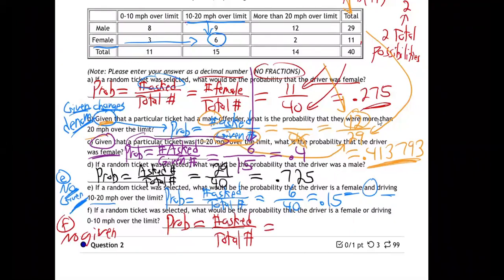Like if I told you I grabbed somebody off a soccer team — they're not just a random person anymore, they're on a soccer team, that changes the game. So the total number is going to be 40 on this one because there's no given. And then what's the top going to be? Whatever they're asking for — female or driving zero to 10 over the limit.